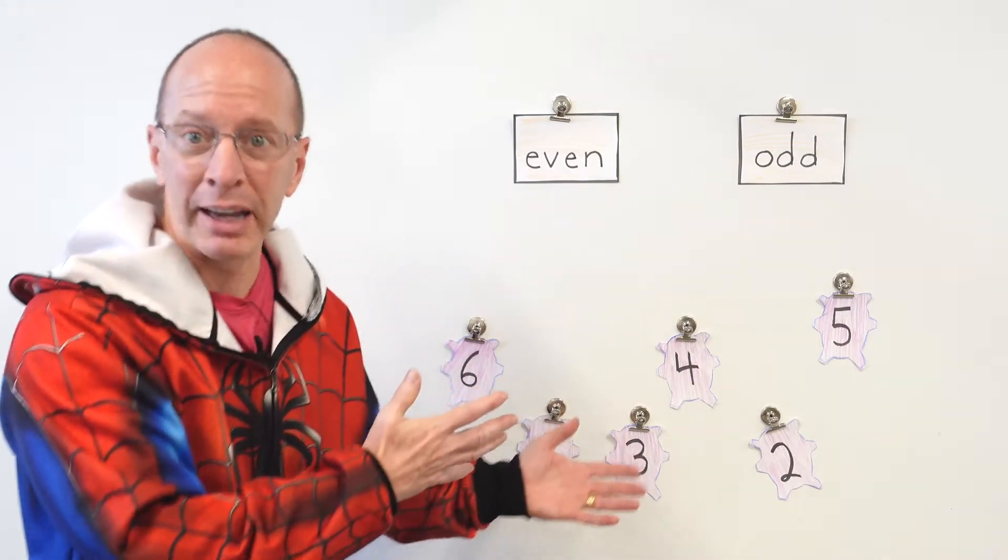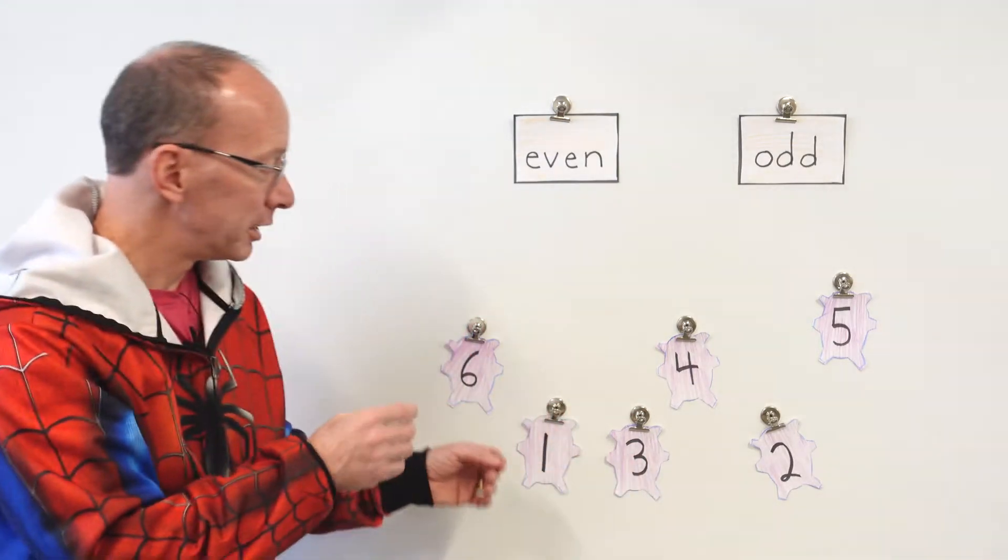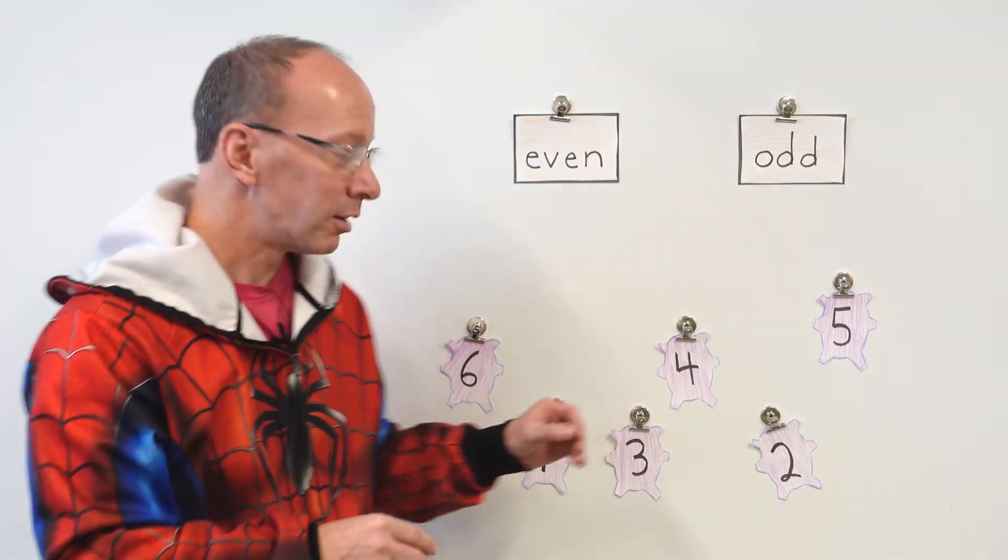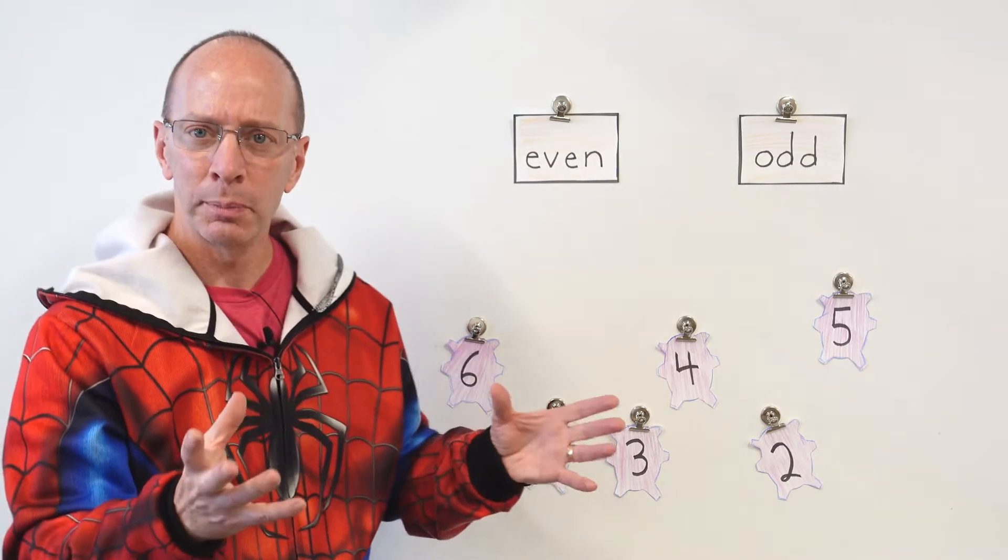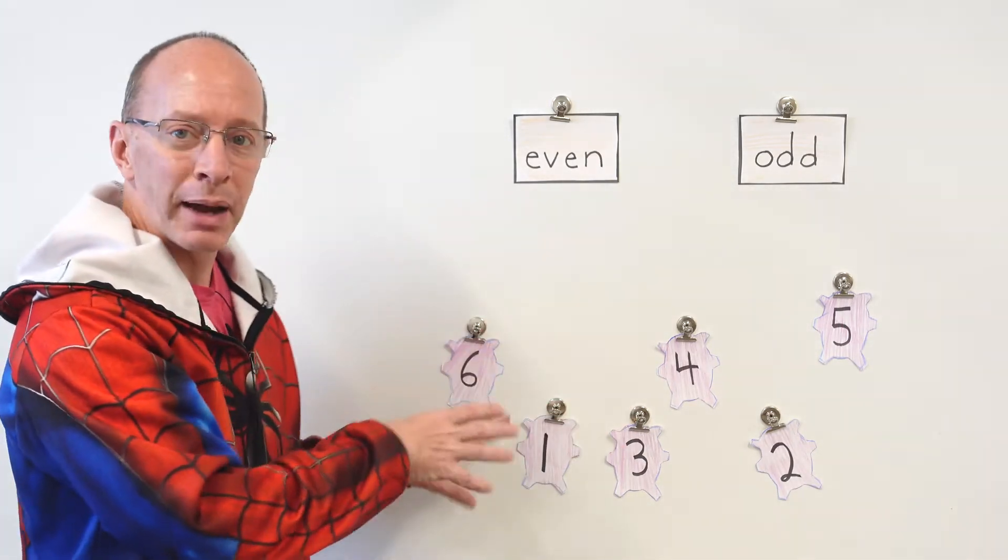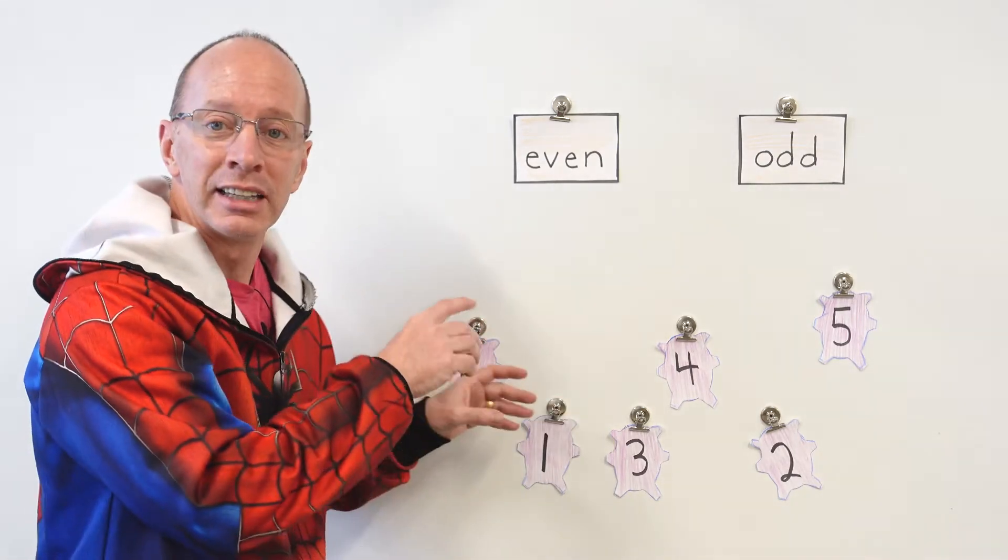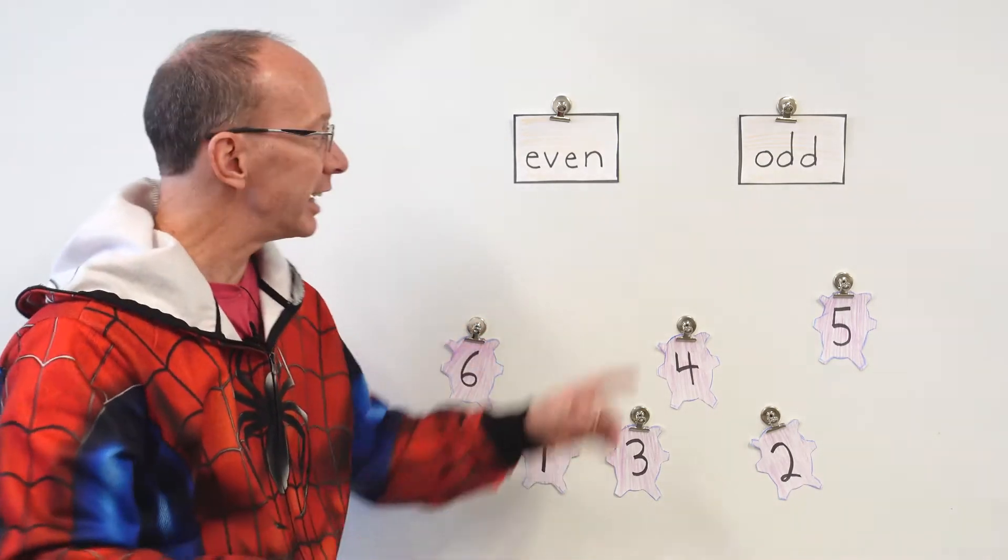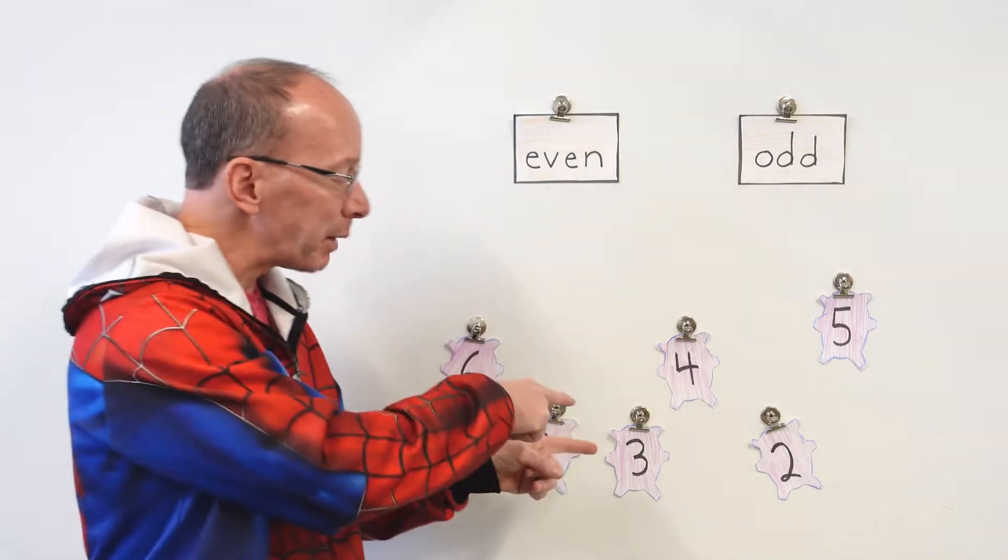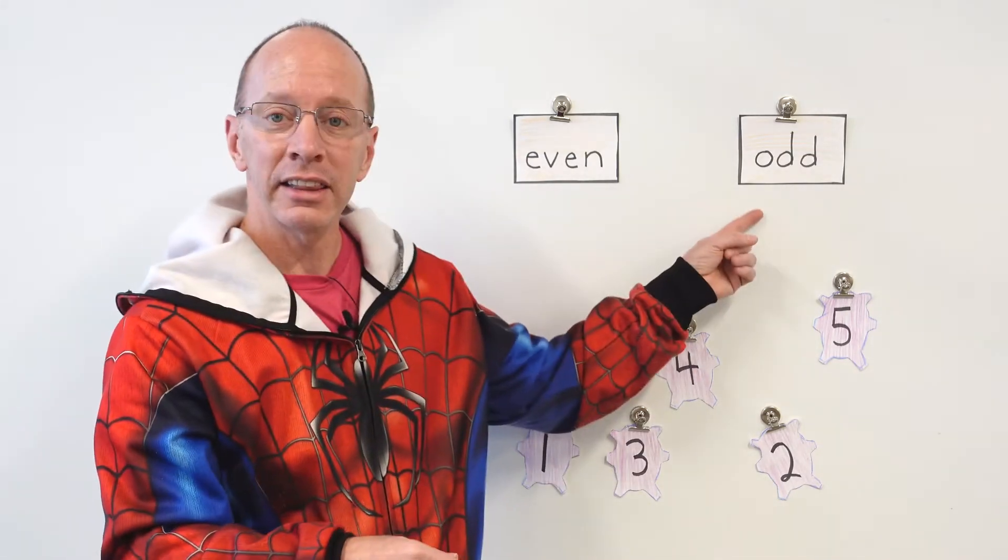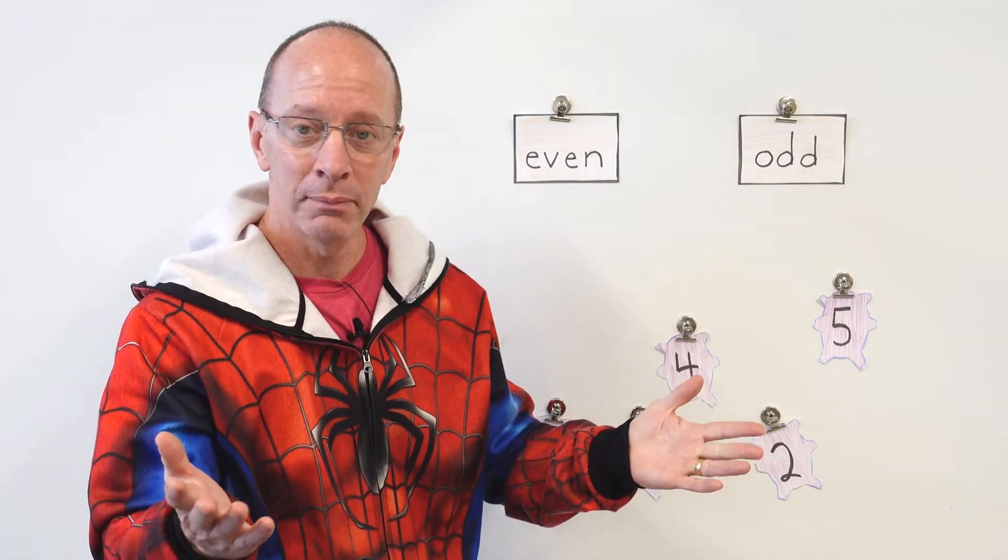All right. Let's take a look at this. I have some spiders that got loose from one of my experiments. So I was trying to make some superwebs. And these spiders have to go in the right boxes. So I need to put the spiders with the even numbers in the even box and the spiders with the odd numbers in the odd box. Can you help me out?